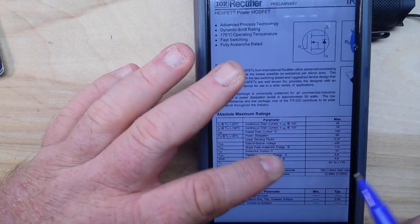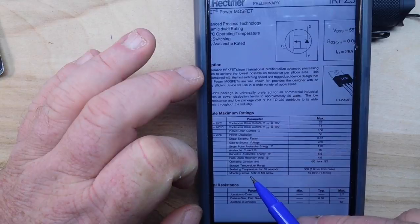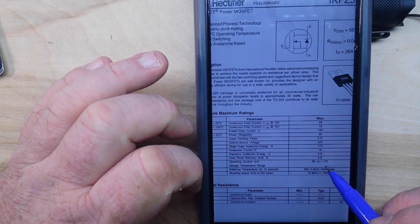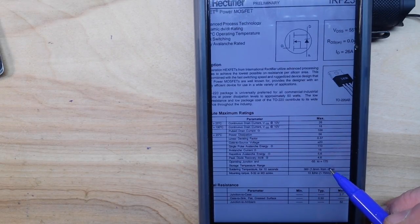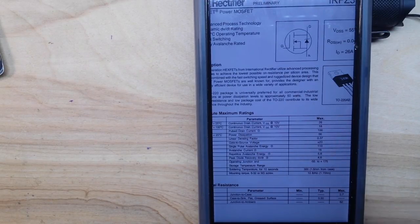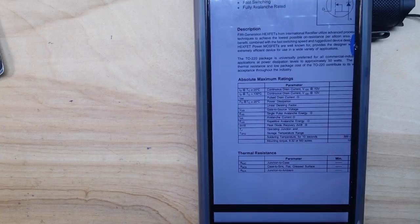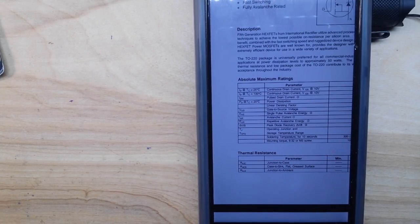Although in the case of this one, here we go: our operating junction and storage temperature range is minus 55 to 175 degrees C. So this thing will operate at 175 degrees C without pitching a bitch. I mean, that's phenomenal. Now if we're going to get up in that range though, you're definitely going to want to heat sink this, or use some sort of other active cooling.